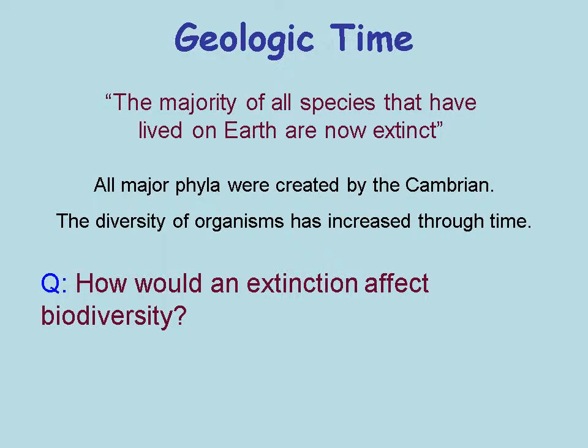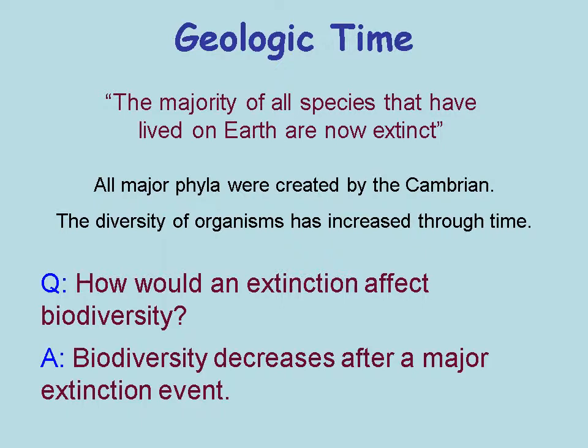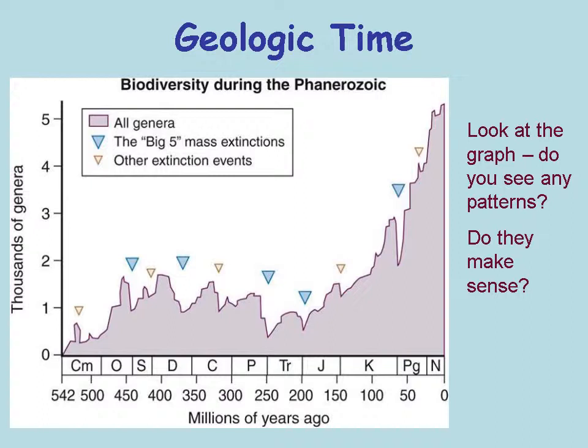How would an extinction affect biodiversity? Biodiversity decreases after a major extinction event. This graph runs from the Cambrian explosion to today, left to right, showing the number of genera that exist from the Cambrian until today. Notice that there are five times more genera of animals and plants today than there were 500 million years ago.